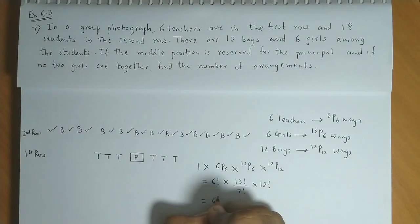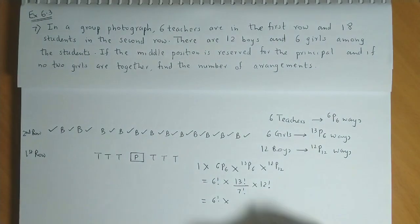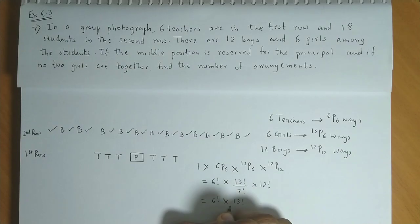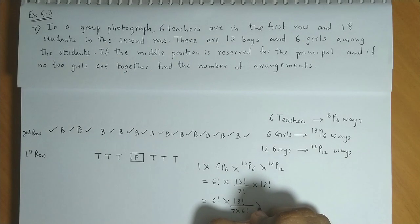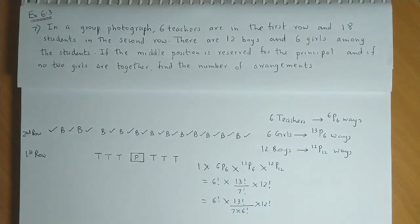So if we simplify this, we have 6 factorial into 13 factorial upon 7 times 6 factorial into 12 factorial.